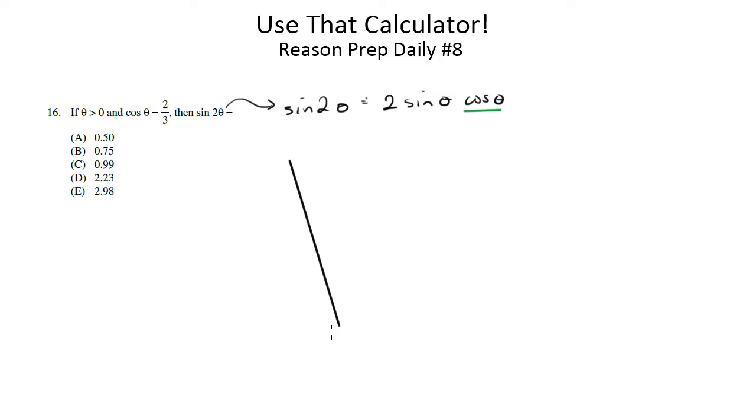So what we can do is create a little right triangle here. Imagine that this is theta. If this is theta by SOHCAHTOA, the cosine of theta would be the adjacent over the hypotenuse. And since the cosine of theta equals two-thirds,